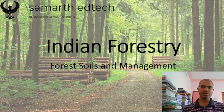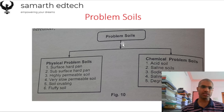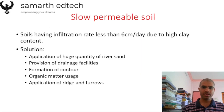Hello aspirants. In this session on Indian Forestry, we will be studying forest soils and management, included under Paper 1 of the forestry subject. The first topic is problem soils — soils which have certain problems due to which cultivation of trees or crops is not happening properly. Problem soils are divided into two types: physical problem soils and chemical problem soils. Physical problem soils have six different problems, and chemical problem soils have five.